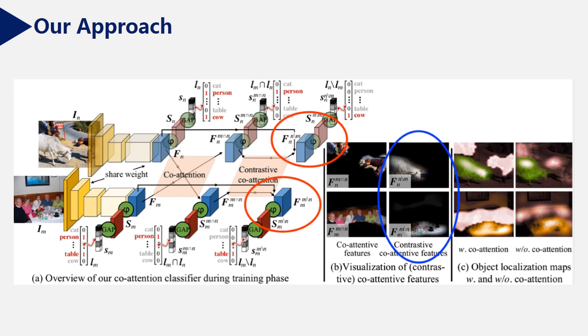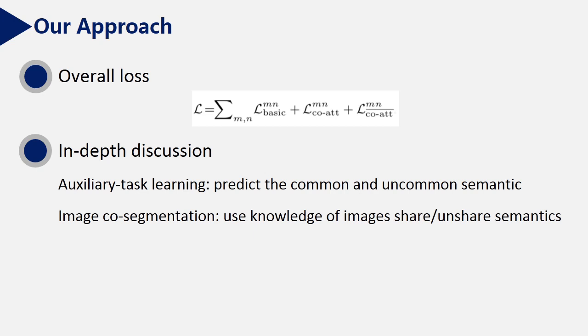Again, let's go back to the example. The red circle contains contrastive co-attention features and the blue circle shows the visualization. In this example, the non-common class for the first image is cat and for the second image is table. The benefit of contrastive co-attention is that when the common objects are filtered out by the contrastive co-attention, the classifier has a chance to focus more on the rest image regions and discover the unique semantics in a better way.